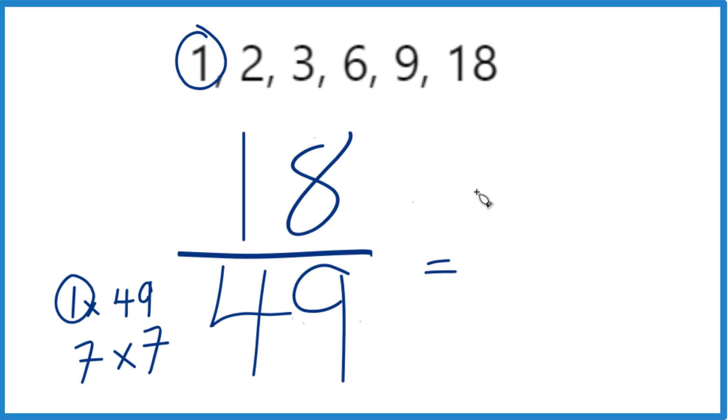So we divide 18 by 1, we get 18, and then when you divide 49 by 1, you get 49.